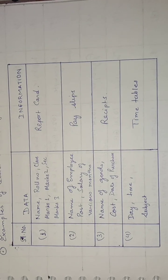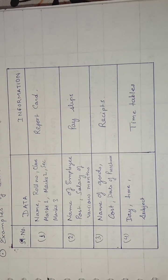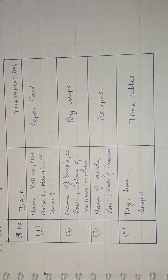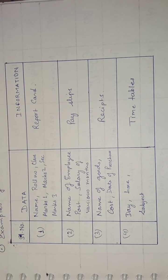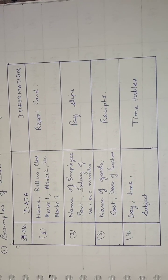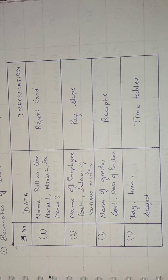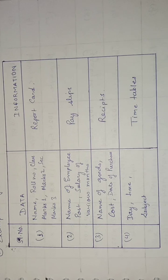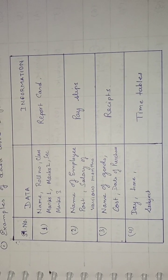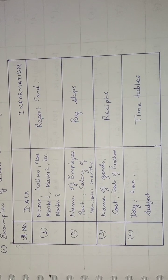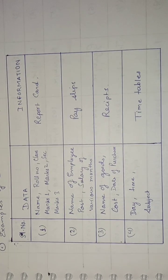Name, roll number, class, and marks are data. When accumulated into a simple format they make information — that is the report card. Names of employees, post, and salary for various months are simple data; when accumulated into a pay slip, that makes information. Names of goods, cost, and date of purchase are data; when accumulated in a particular format they form receipts, which is information. Day, time, and subject alone don't make sense, but together they form a timetable, which is information.